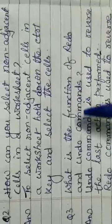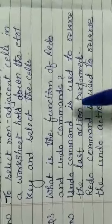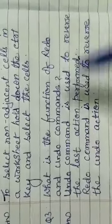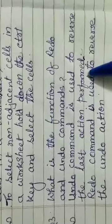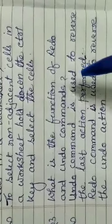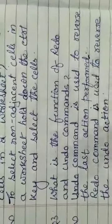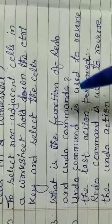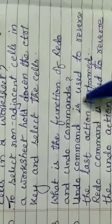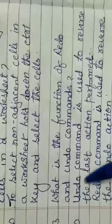Now question number 3: What is the function of redo and undo commands? Answer is: Undo command is used to reverse the last actions performed. Suppose you have changed something and you want back the same one, then you can use undo command. And shortcut for undo command is Control plus Z. Now redo command: Redo command is used